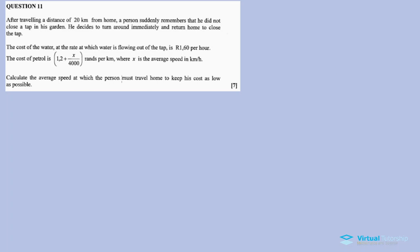We need to calculate the average speed at which the person must travel home to keep his cost as low as possible. Before we can calculate the average speed, we need to set up the total cost function — which involves the cost of petrol plus the cost of water.